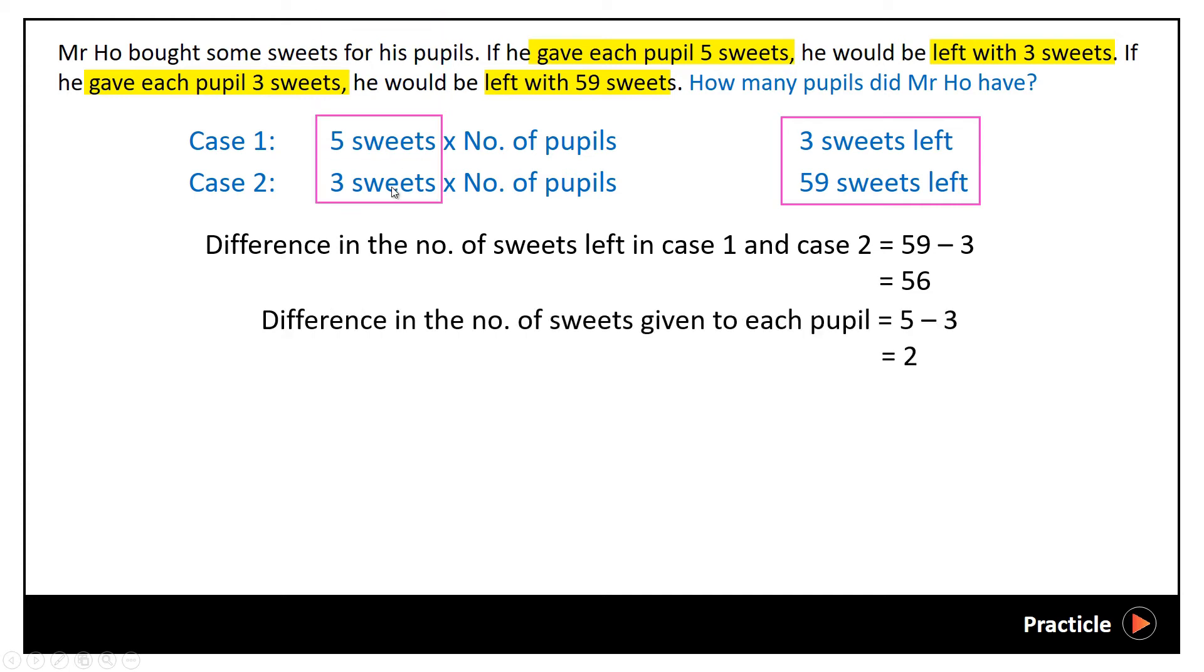So what do all these numbers mean? It means that this 56 sweets here was actually a result of him giving 2 less sweets to his pupils each.